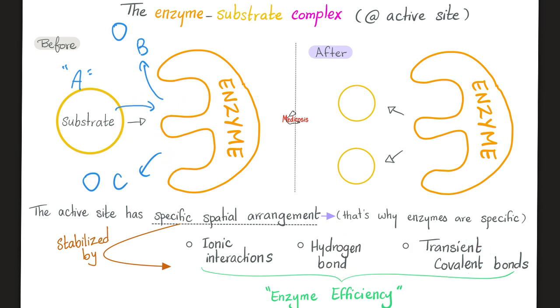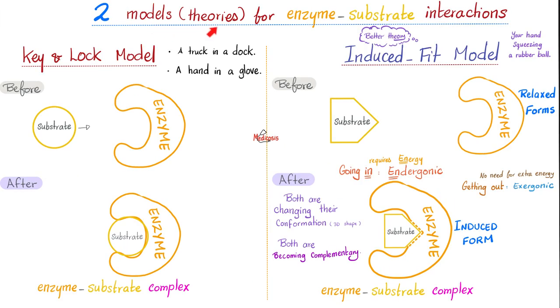There are two models or theories to explain the enzyme-substrate interaction. The old one is the key and lock model. The new one, which is a better theory, more accepted nowadays, is the induced fit model.